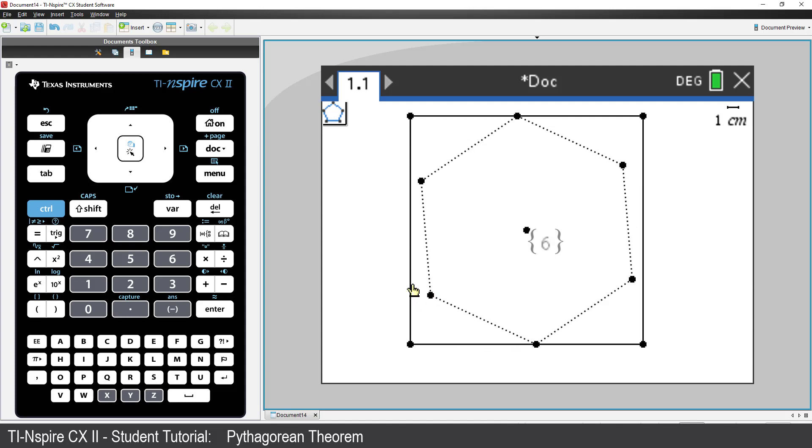Move the mouse towards the left, just as we did before, until it says 4. Then click.